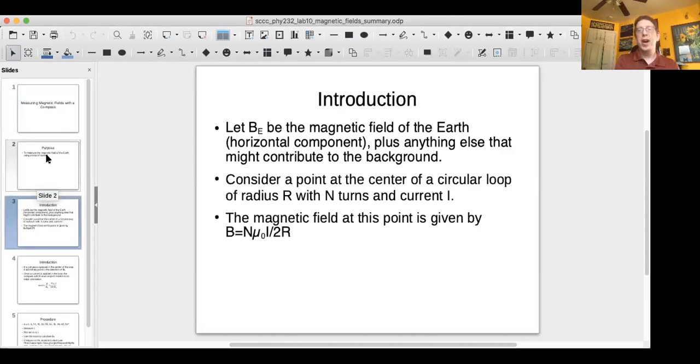We're going to be focusing on the horizontal component of the Earth. We're going to let BE be the horizontal component, which is about 2.0 times 10 to the negative 5 Tesla, plus anything else that might contribute to the background. We're going to consider a point at the center of a circular loop of radius capital R with capital N turns. In this experiment, capital N will either be 5, 10, or 15.